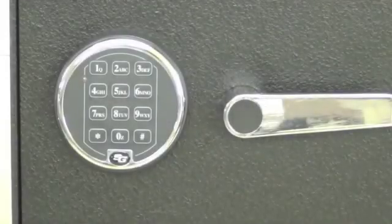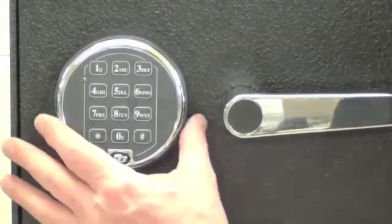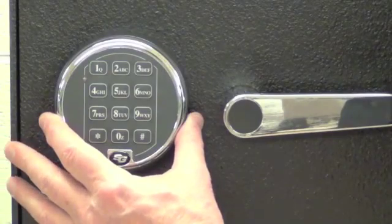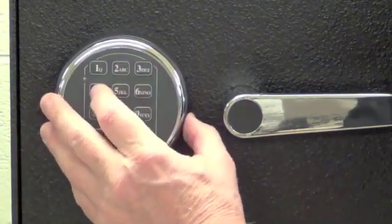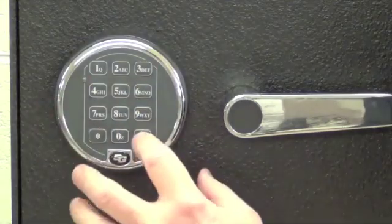Here's simple instruction on how to change the code on your Titan pivot bolt lock. The factory default code is 1, 2, 3, 4, 5, 6, pound.